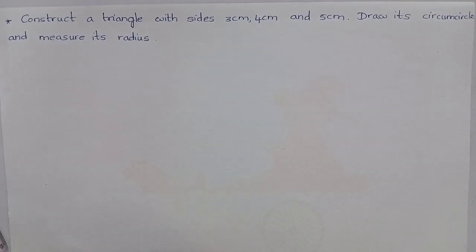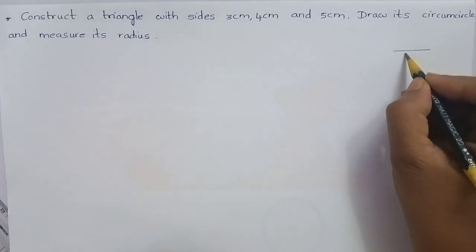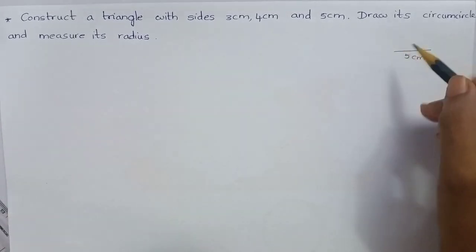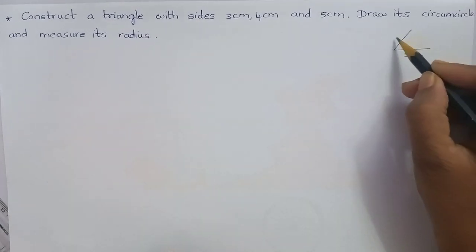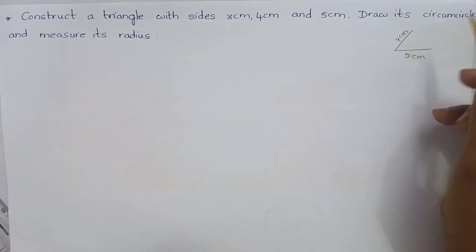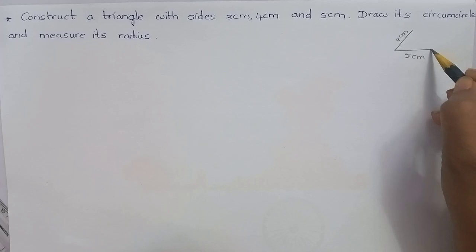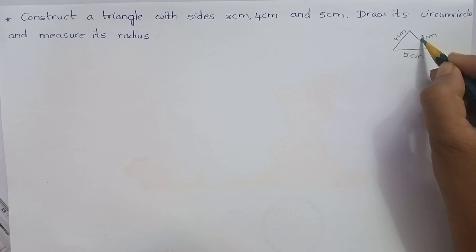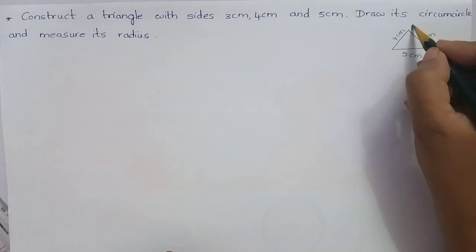First, let me draw a rough diagram. It is 5 cm and let me mark 4 cm and from here let me mark 3 cm and let us name it as ABC.